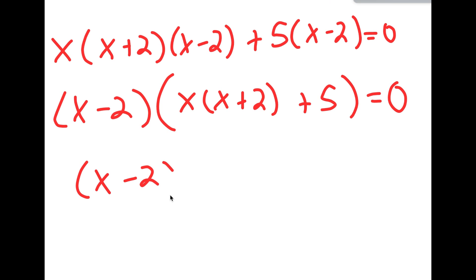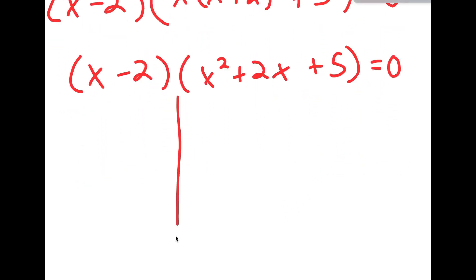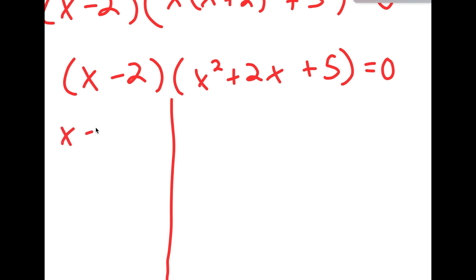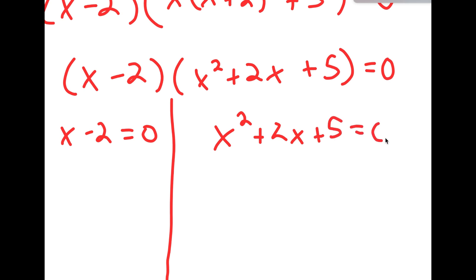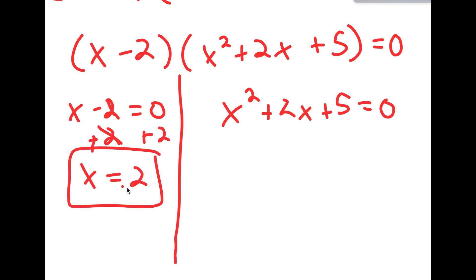This simplifies to x minus 2 times x squared plus 2x plus 5 is equal to 0. This gives me two equations: x minus 2 equals 0, and x squared plus 2x plus 5 equals 0. For x minus 2 equals 0, I can simply add 2 on both sides, so I get x equals 2. And remember, we already got this solution by guessing at the start.